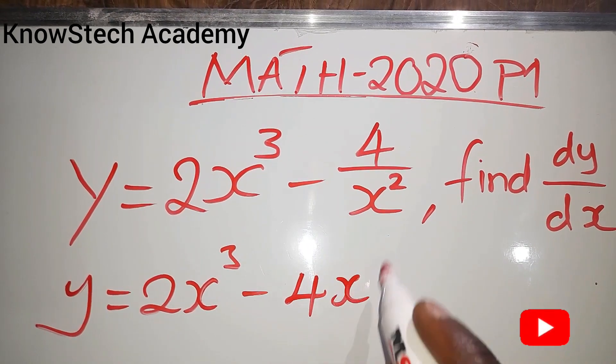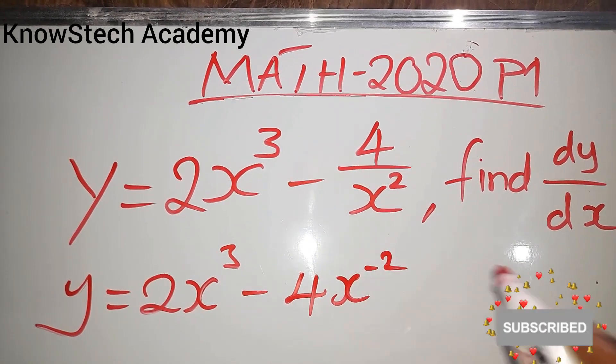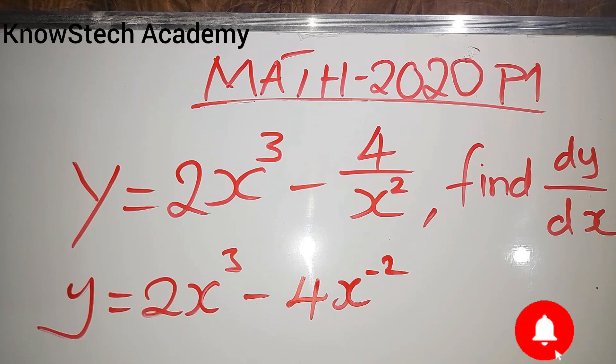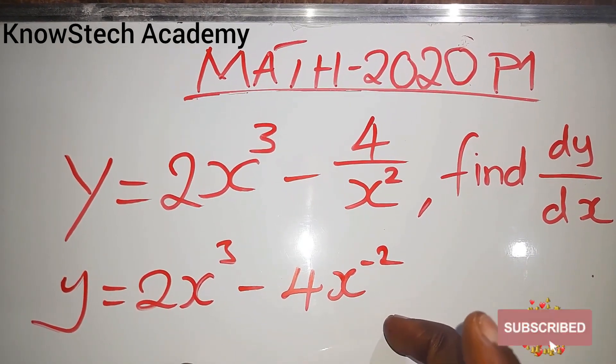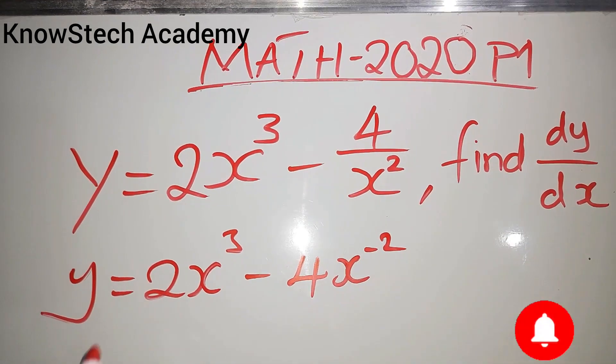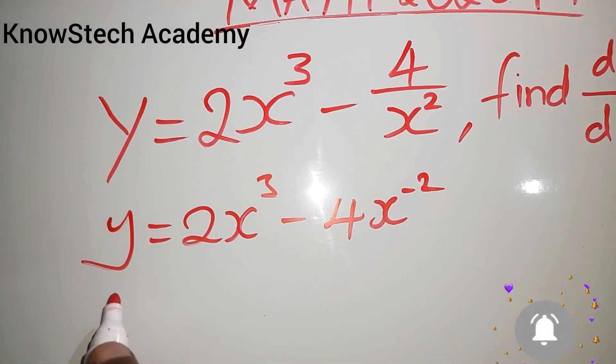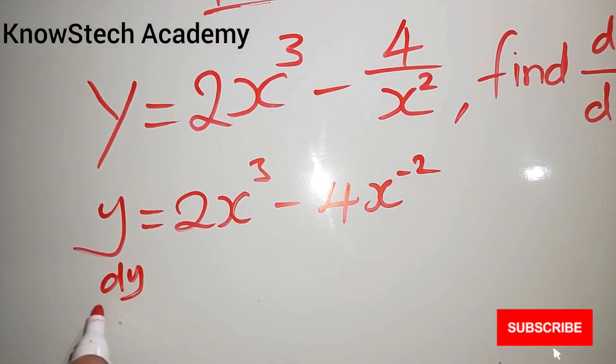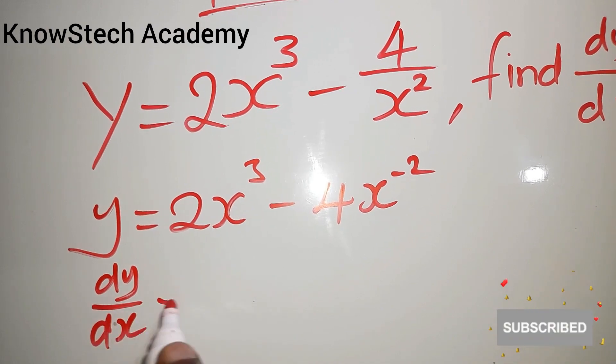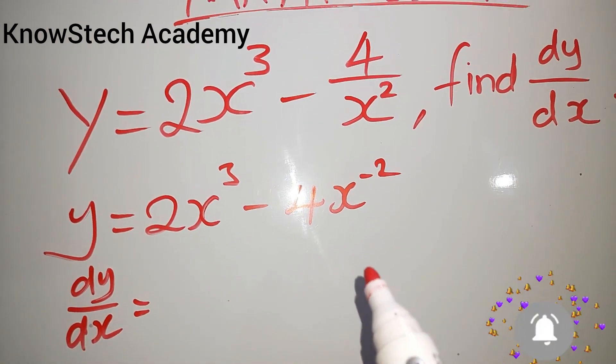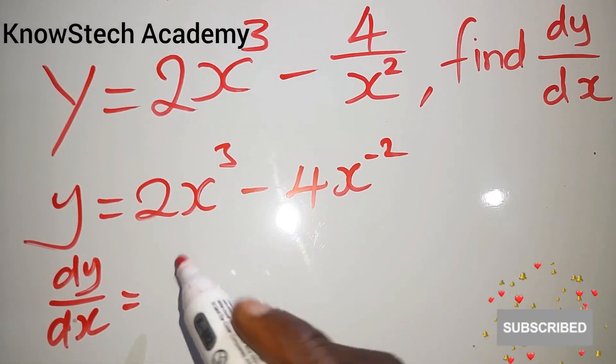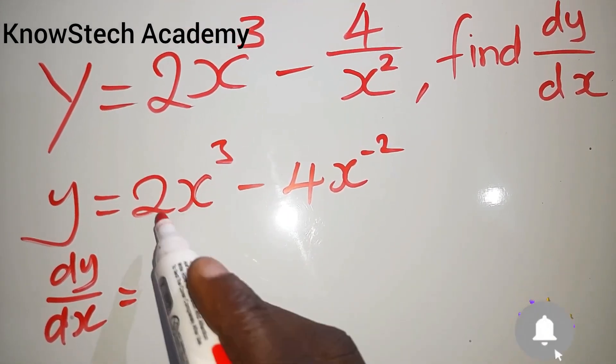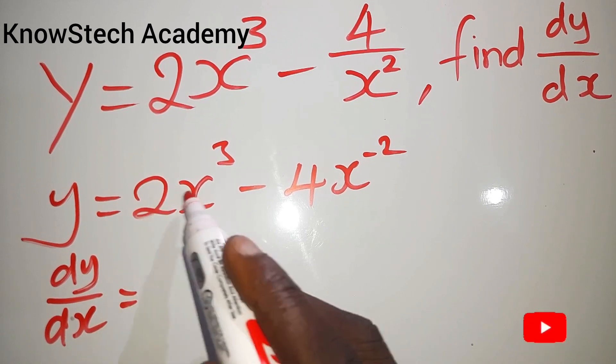Now we can start solving. So dy/dx - we are differentiating. When differentiating, remember we multiply the power times the coefficient, the number in front of the variable.